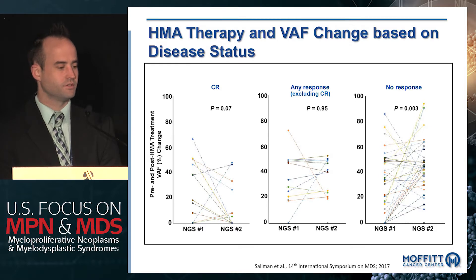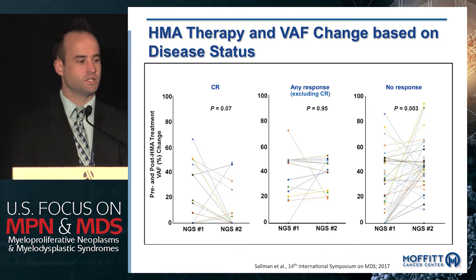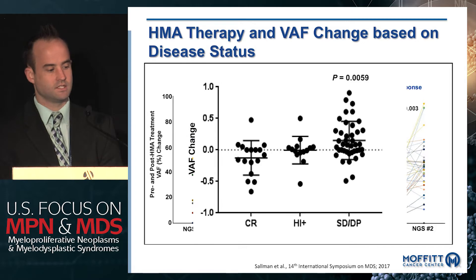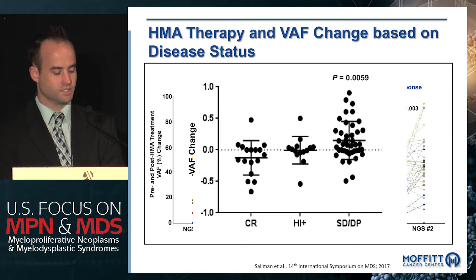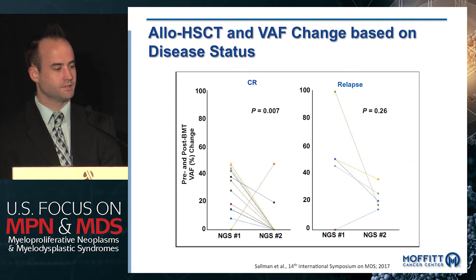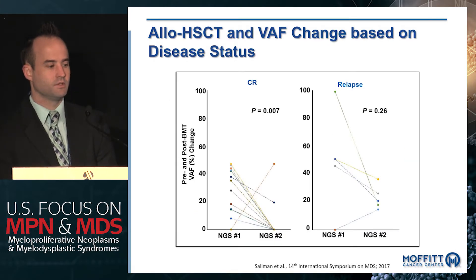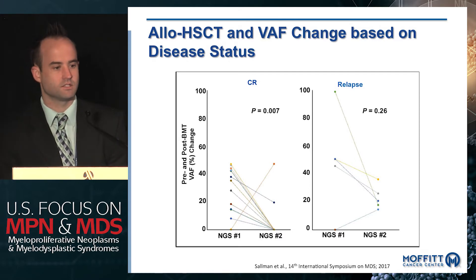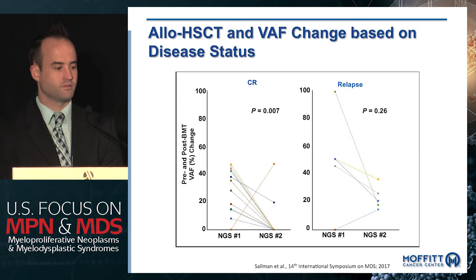Looking at response to hypomethylating agents: patients achieving a true CR can have VAF reductions or in some cases become NGS-negative at a 5% threshold. Patients with other responses — hematologic improvement, partial response, or marrow CR — have no change in VAF. Patients with no response or progression clearly show an increase in VAF, and these differences are statistically significant. We see the same pattern with chemotherapy and with transplant.